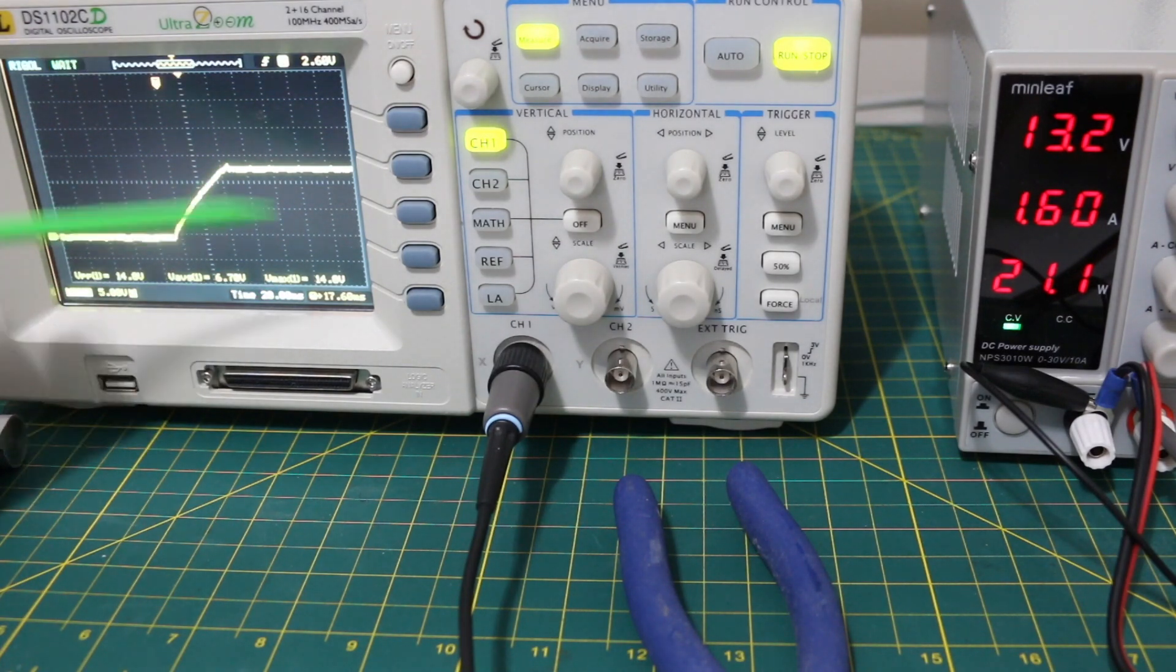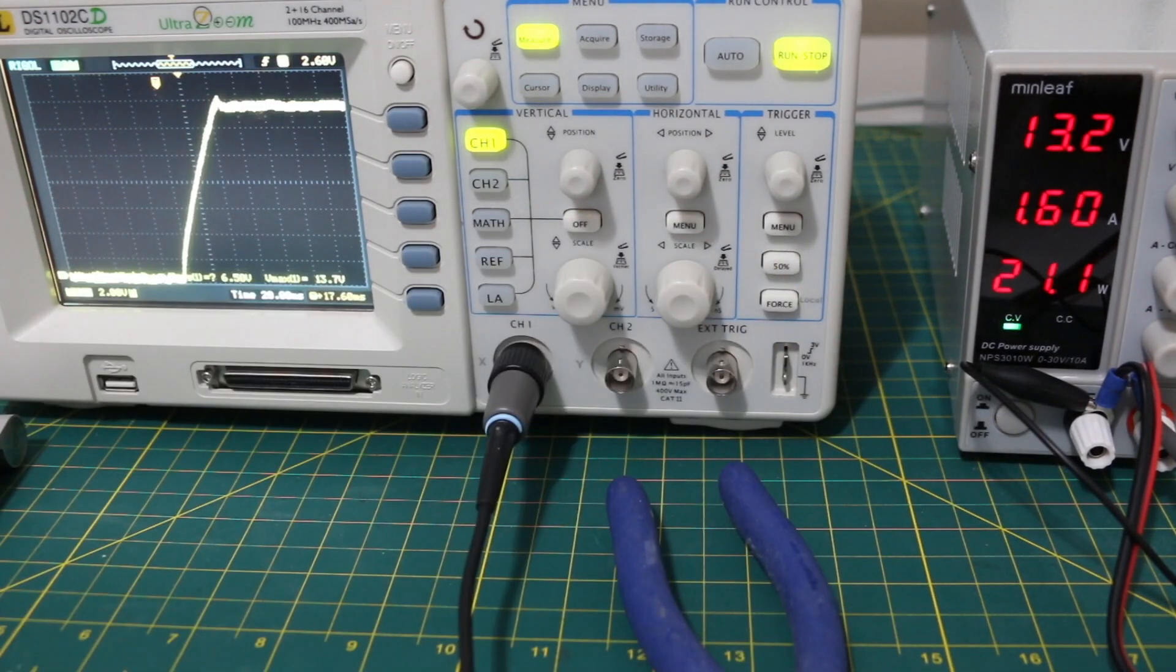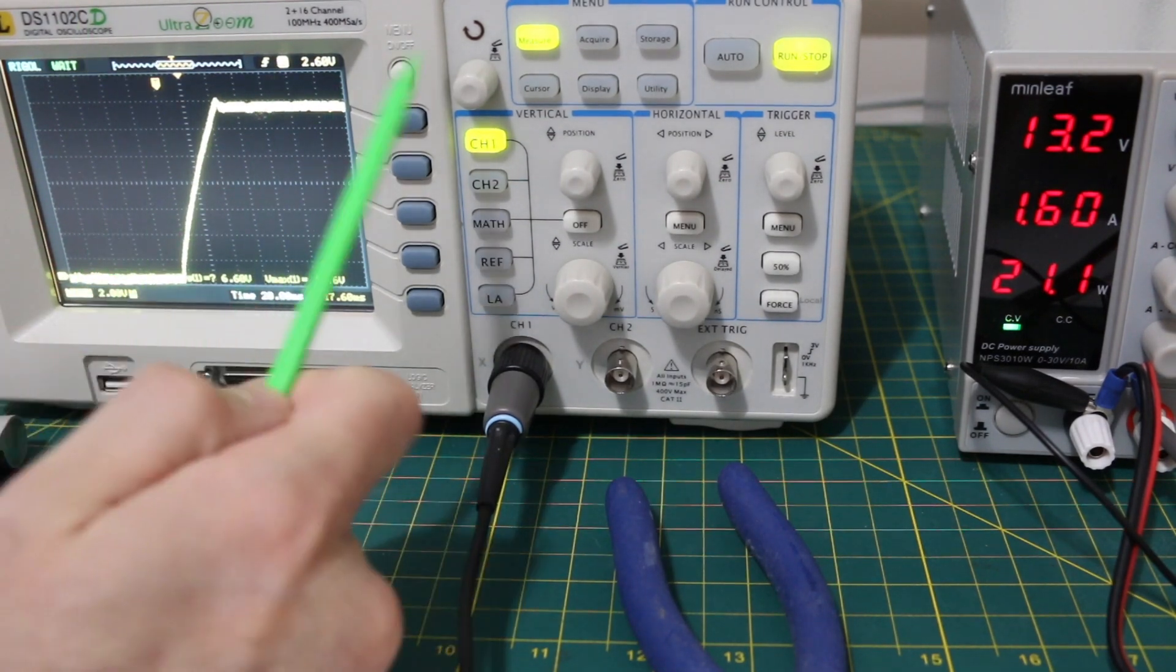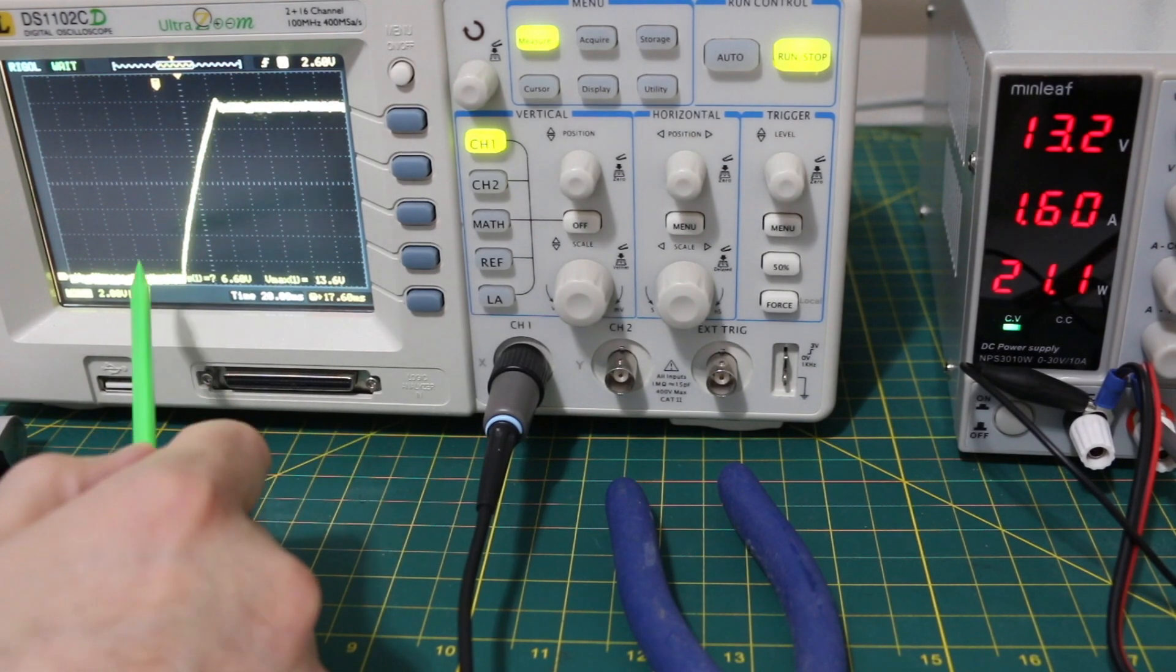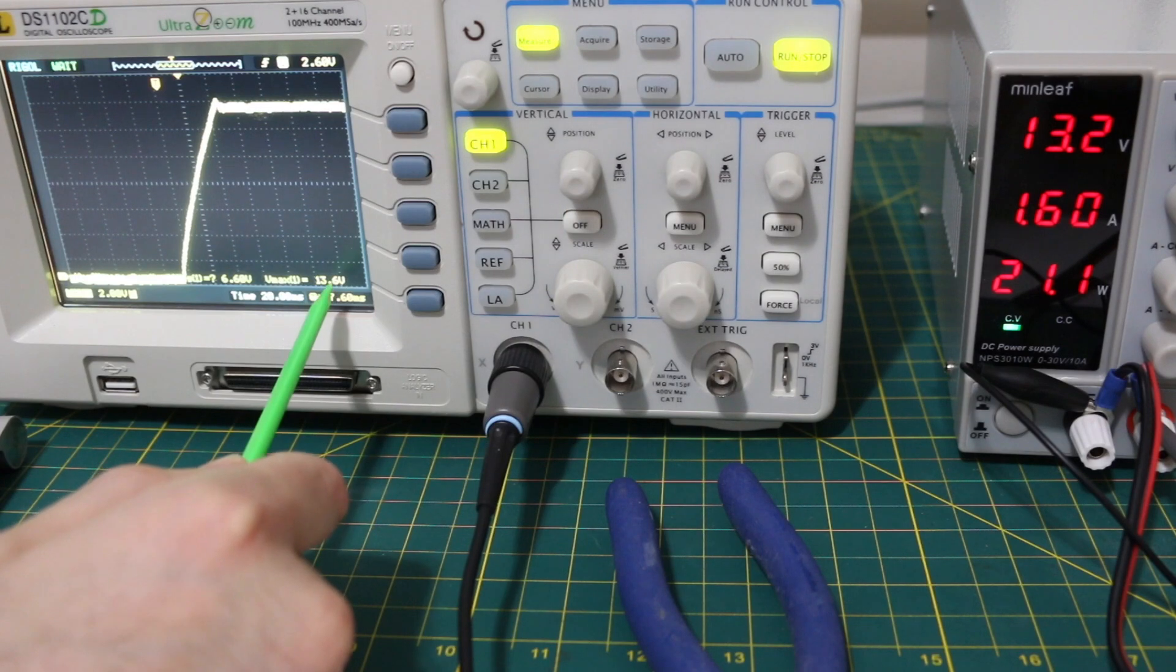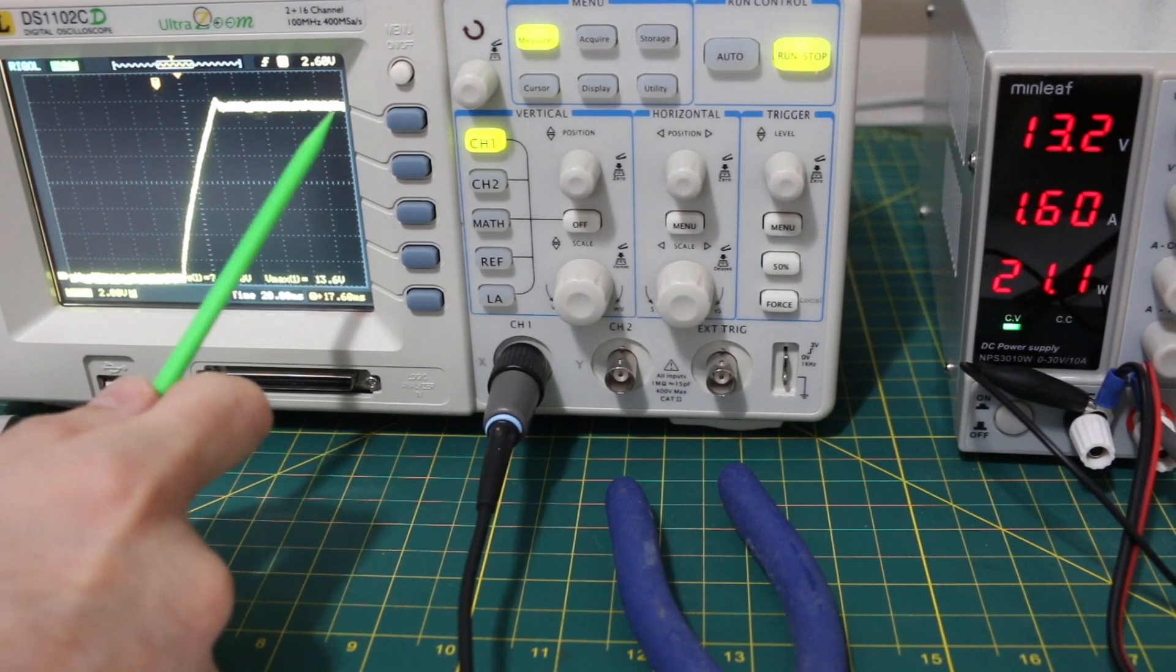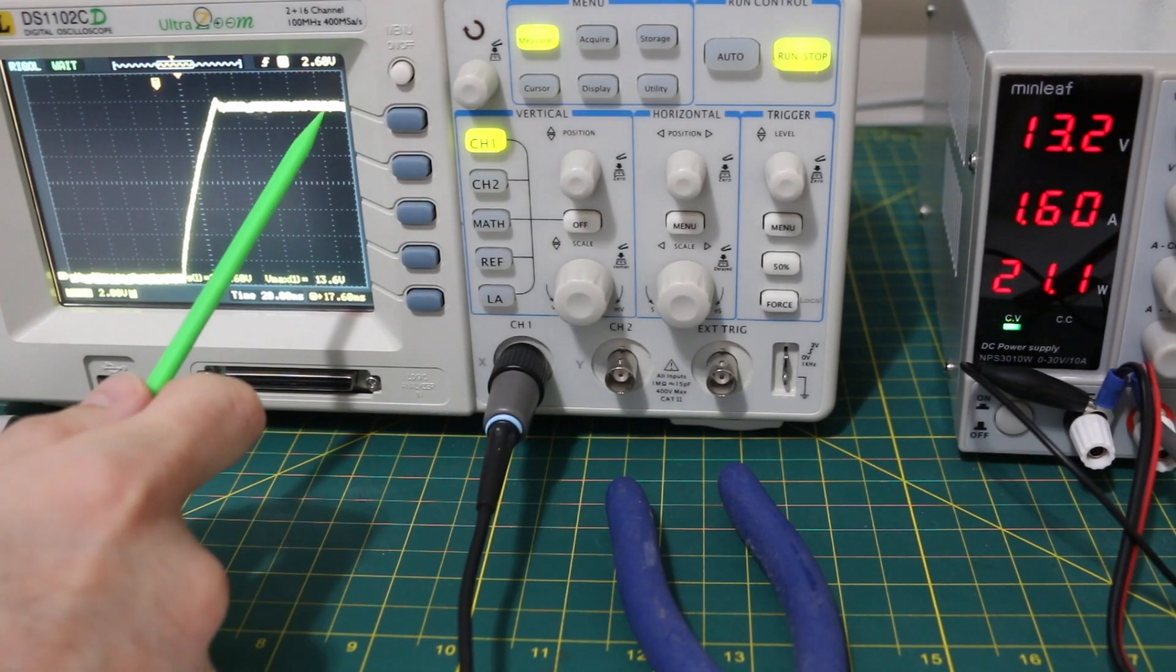Just something to keep in mind, power supplies often do this. So if you're going to be hooking up to something voltage sensitive, you might want to just have the supply on so it's stabilized at your output voltage and then connect power with a jumper or something, so you don't get this power on noise and overshoot characteristic.